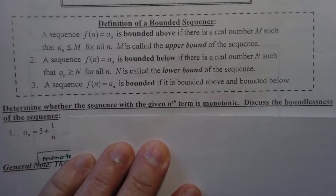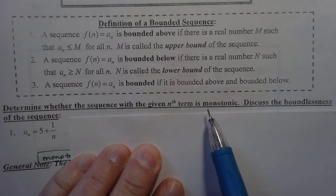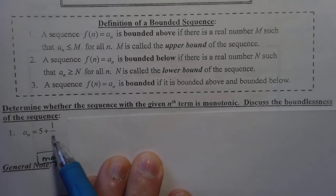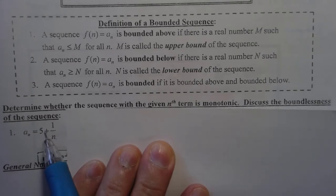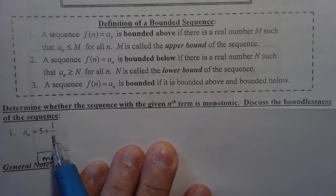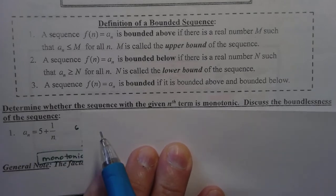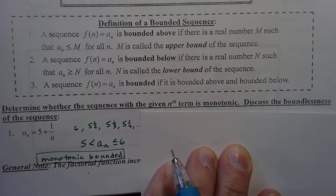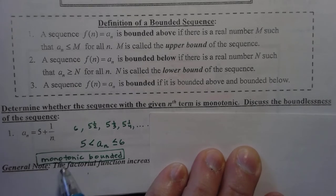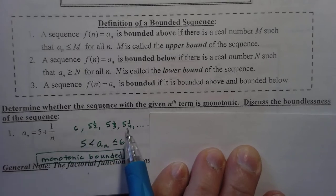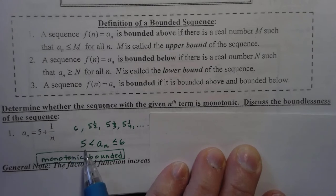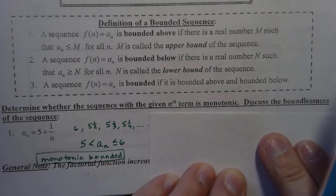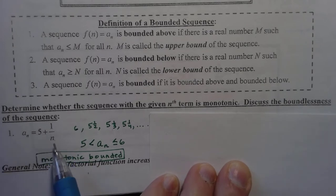We're going to determine whether the sequence with the given nth term is monotonic and discuss its boundedness. As n gets bigger, starting with 5 at n equals 1, my first term is 6, my next term is 5 and a half, and so forth. This is monotonic because each term is decreasing a little bit from the one before. So it is bounded. Notice we are never actually going to get to 5 because we're always adding 1 over something — never quite 0.